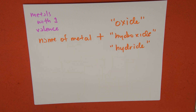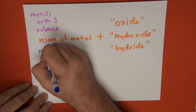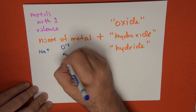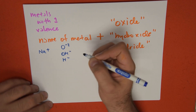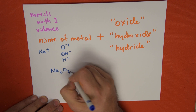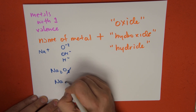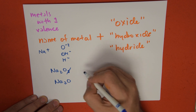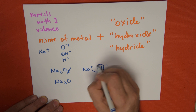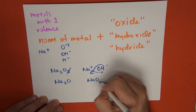Let's do some concrete examples with sodium. Sodium is Na⁺. Oxygen is minus 2, OH is minus 1, and hydrogen is minus 1. Combining sodium with oxygen gives us Na₂O. Then Na⁺ with OH⁻: when we do the crisscross we get ones, so we just write NaOH.